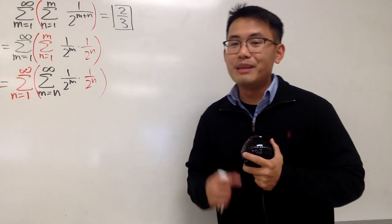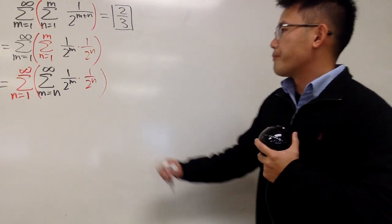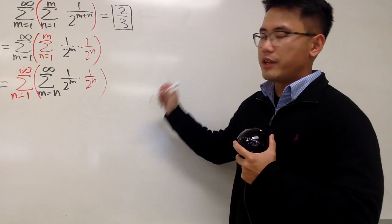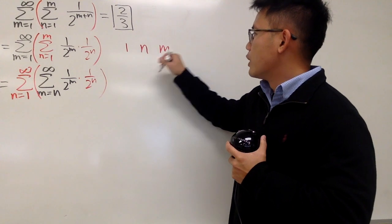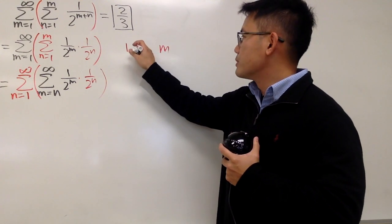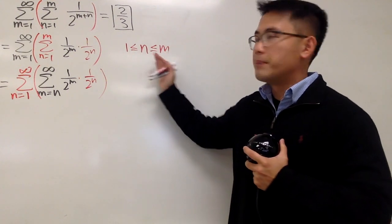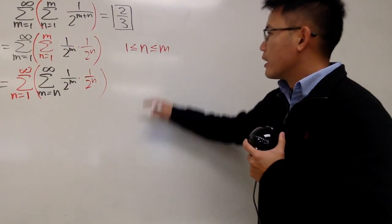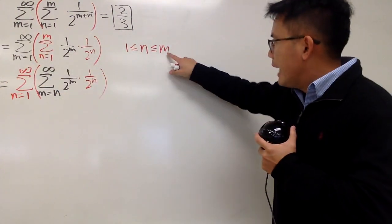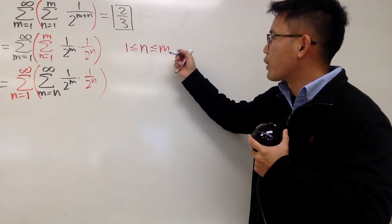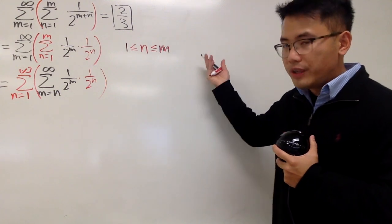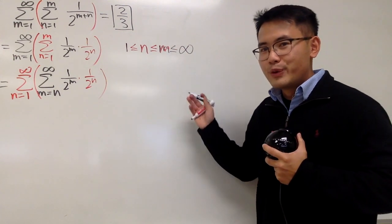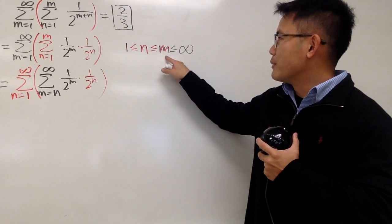It's a bit weird, I know. Let me give you a quick explanation. Here's the deal: we see that n goes from 1 to m, so n is between 1 and m. We can write that as an inequality: 1 ≤ n ≤ m. And since m goes from 1 to infinity, we have m going up to infinity. So altogether we have n goes from 1 to m and m goes from 1 to infinity.